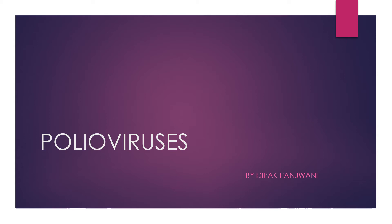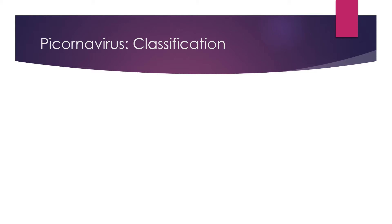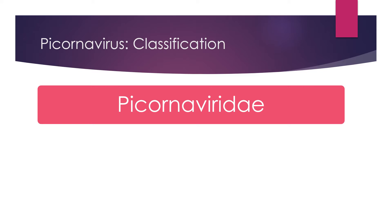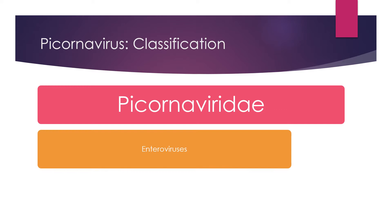Welcome to this e-learning session on poliovirus. We will start with classification. Poliovirus belongs to the family Picornaviridae, which has two major groups. The first and most important is enterovirus, which has various serotypes. Among these, the most important and major serotype is poliovirus, which has subtypes one, two, and three.